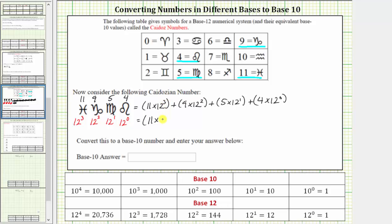12 to the third is 1728, plus 9 times 12 squared which is 144, plus 5 times 12 to the first which is just 12, plus 12 to the zero is 1, so we have 4 times 1.